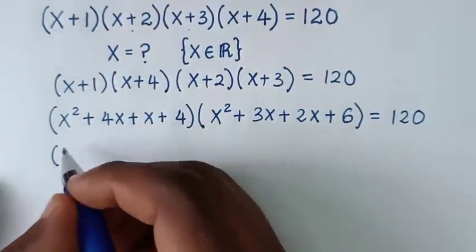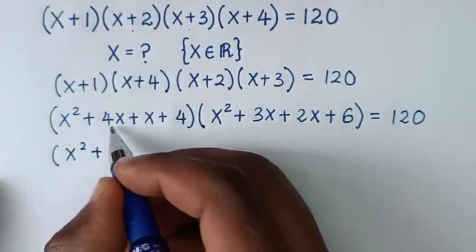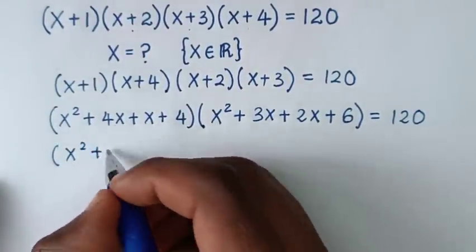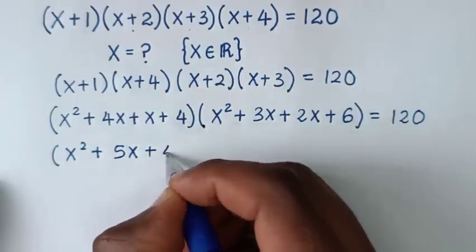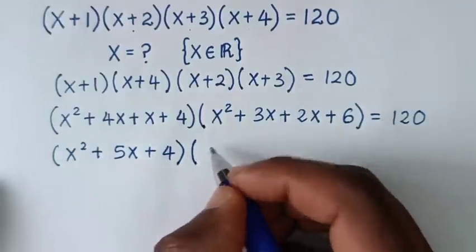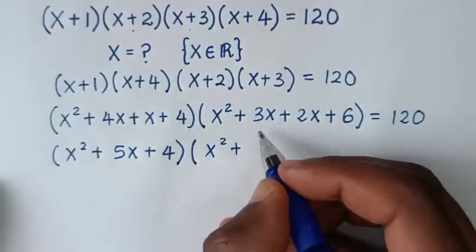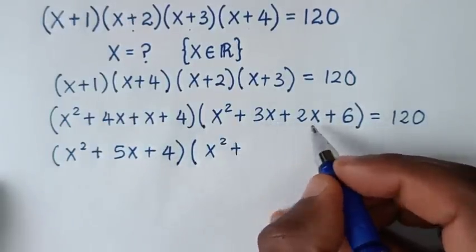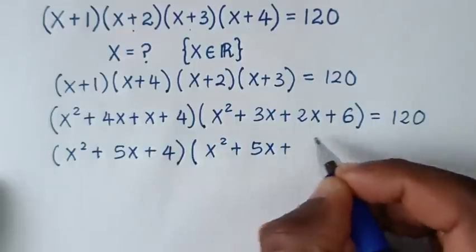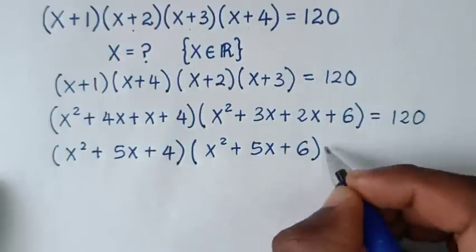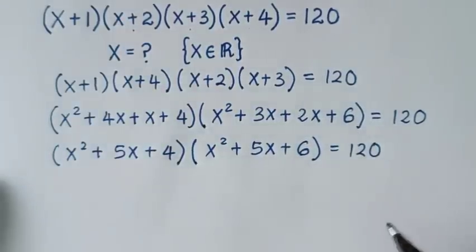In the next step, it will be (x² + x + 4x + x), collecting to get (x² + 5x + 4), times (x² + 3x + 2x), collecting to get (x² + 5x + 6), equals 120.